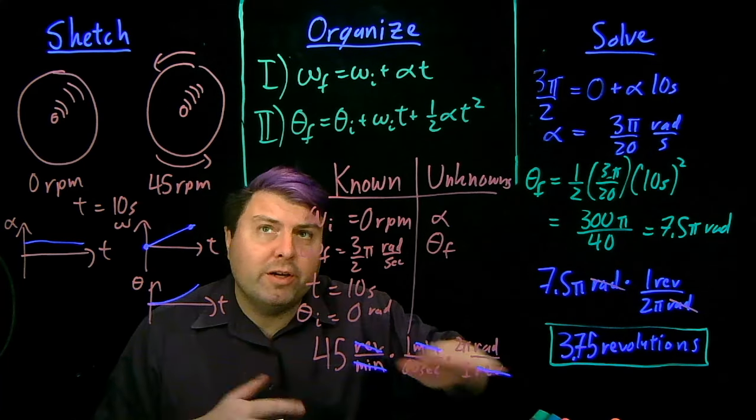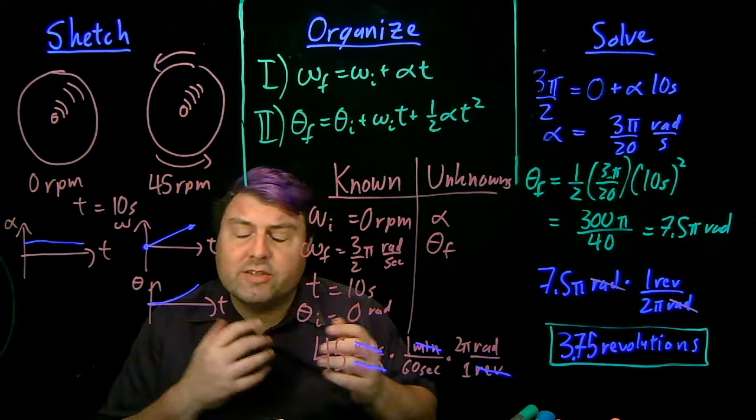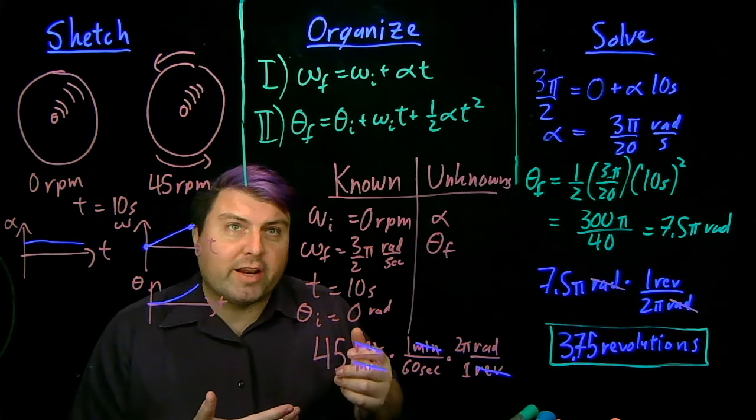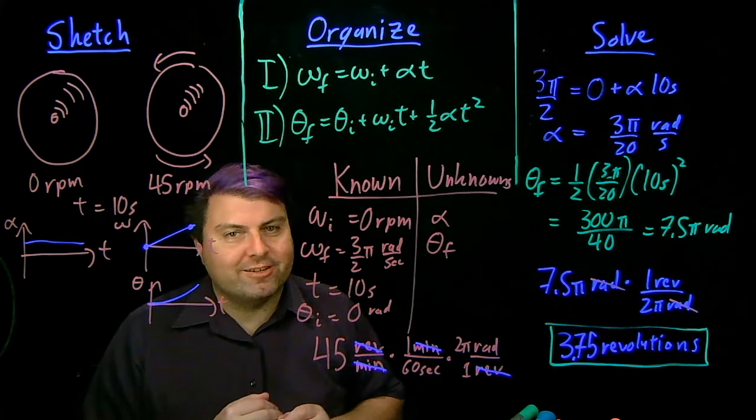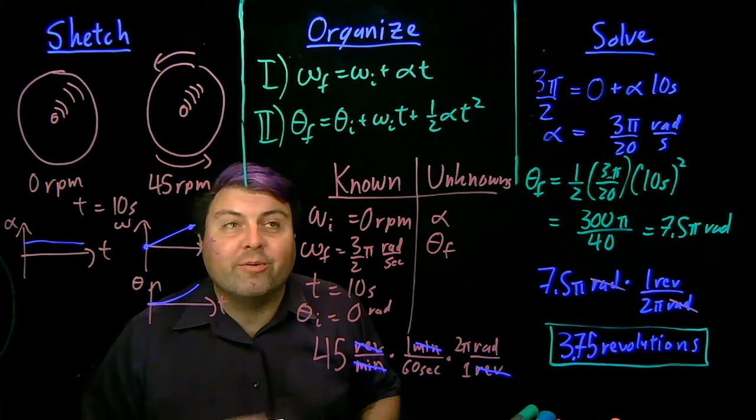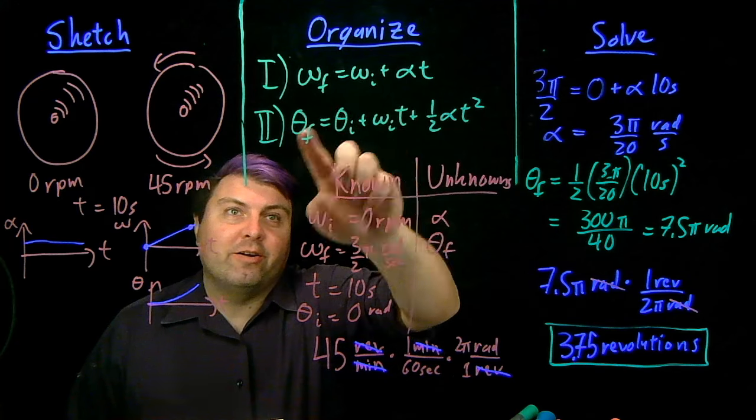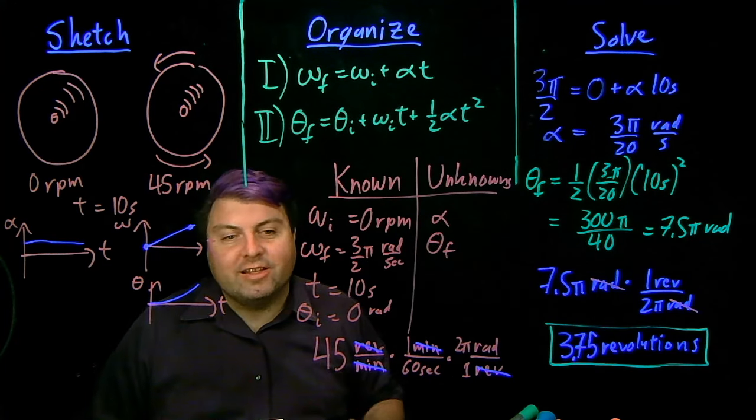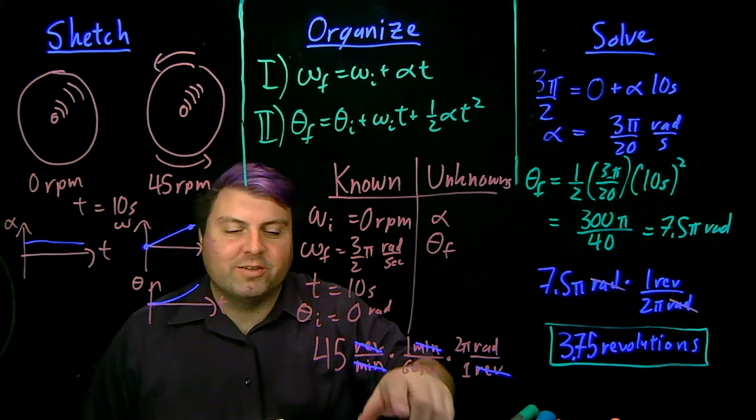So the big thing with circular kinematic problems is they're exactly the same as regular kinematics problems just with a couple of Greek letters. So in fact, they're usually a lot easier because we're accounting for them being scary. Once you can get over the scary omegas, thetas, and alphas, then these turn out to be problems we've already solved and have a lot of experience with.